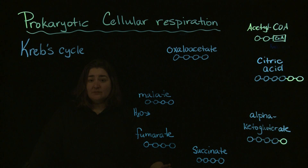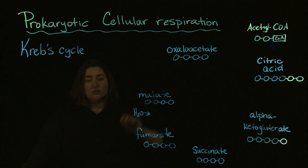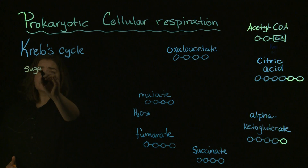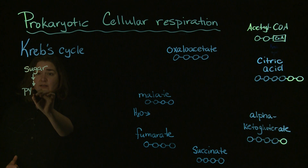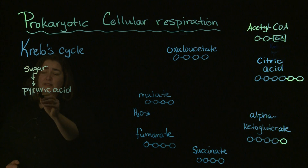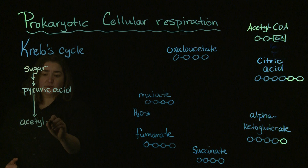Welcome back to cellular respiration. This portion we are going to talk about the Krebs cycle. Remember from the previous video on glycolysis, we generated the product we needed to start the Krebs cycle — that product is our acetyl-CoA. We went from our sugar through various enzymatic steps to generate our pyruvic acid, which was then converted into our acetyl-CoA.